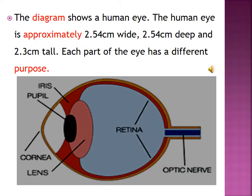The diagram shows a human eye — يوضح الرسم البياني عيناً بشرية. The human eye is approximately 2.54 cm wide, 2.54 cm deep, and 2.3 cm tall.